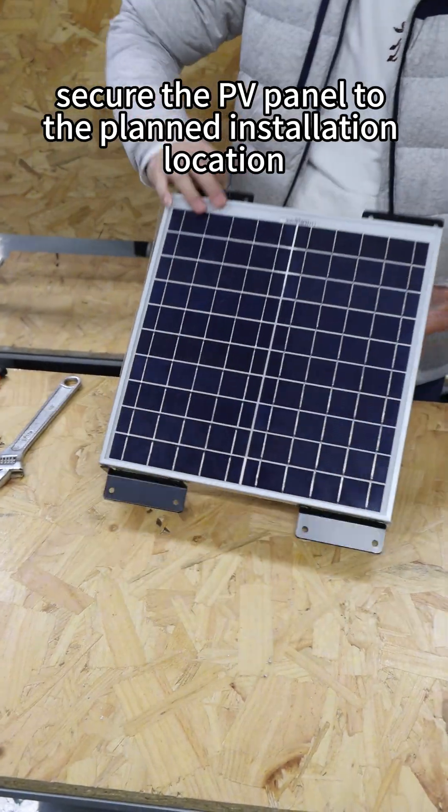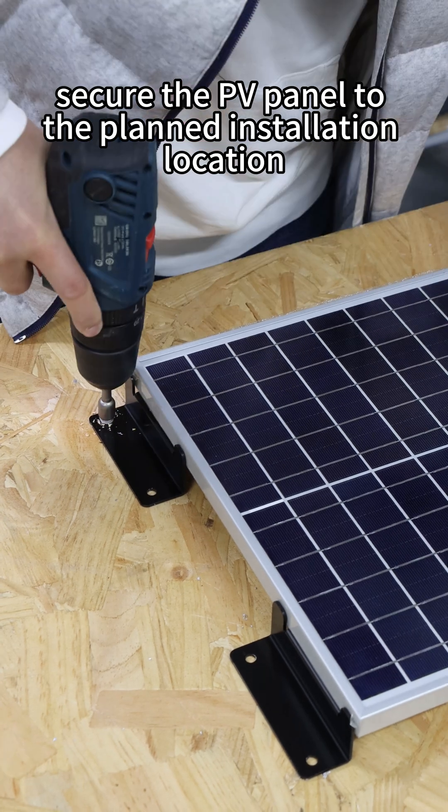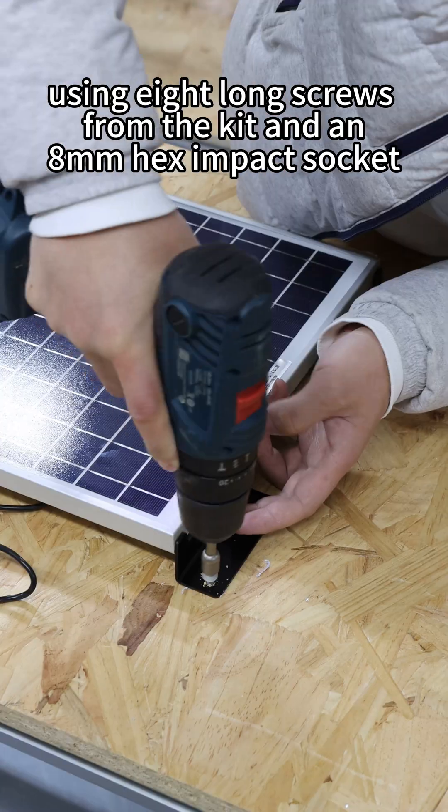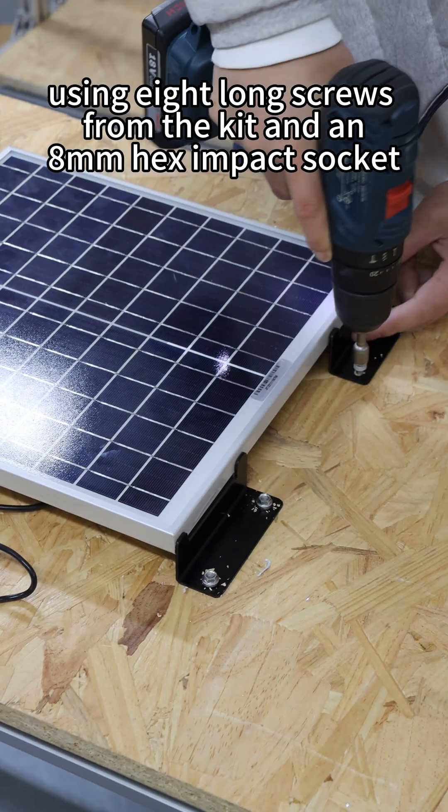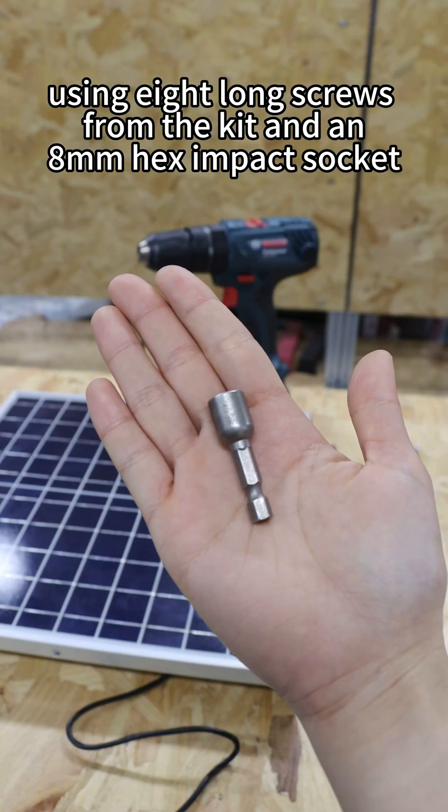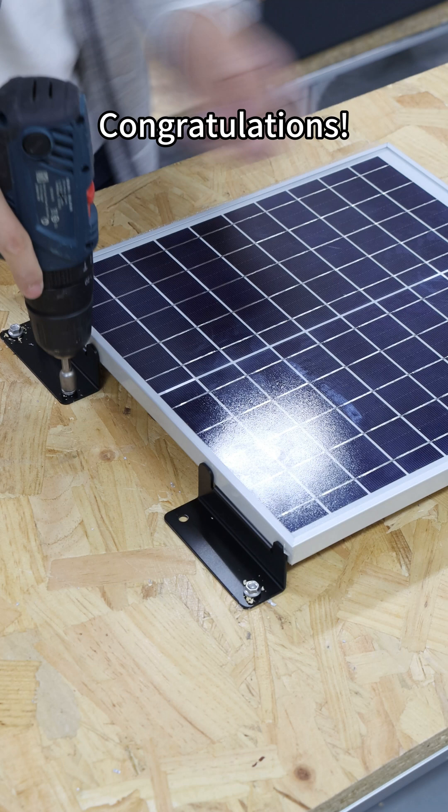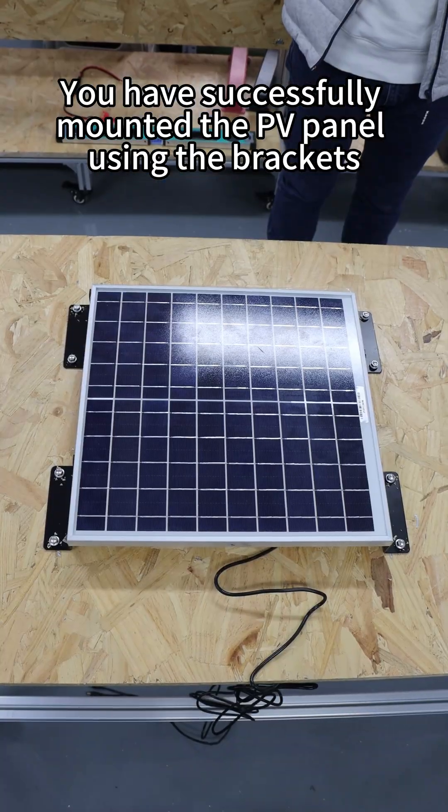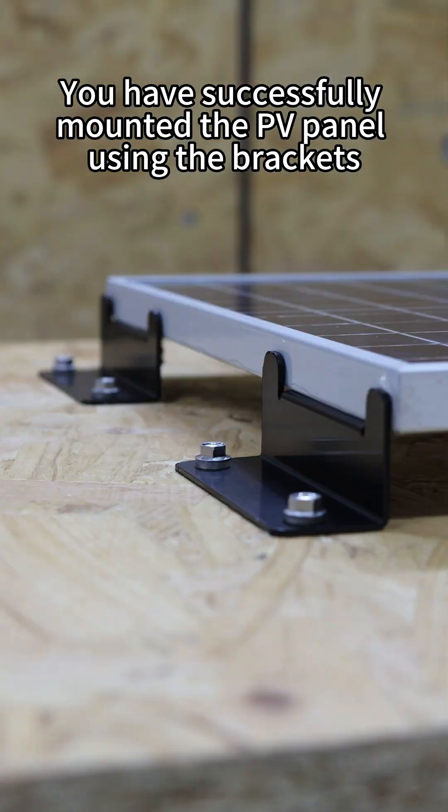Finally, secure the PV panel to the planned installation location using eight long screws from the kit and an 8 mm hex impact socket. Congratulations! You have successfully mounted the PV panel using the brackets.